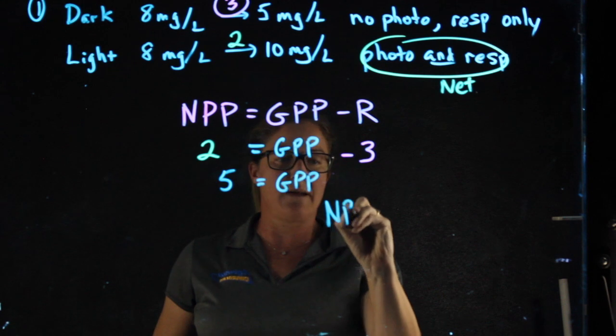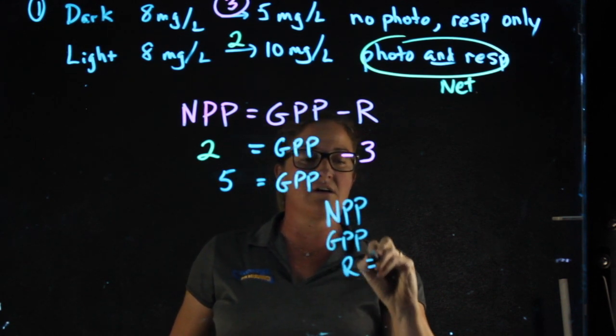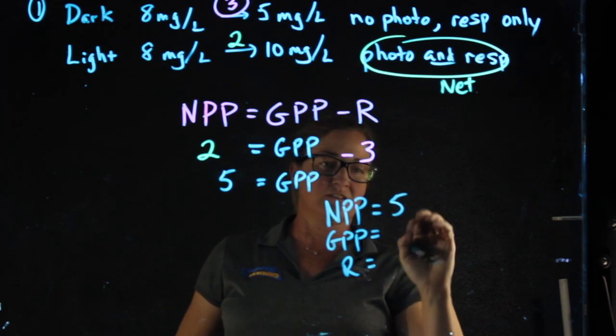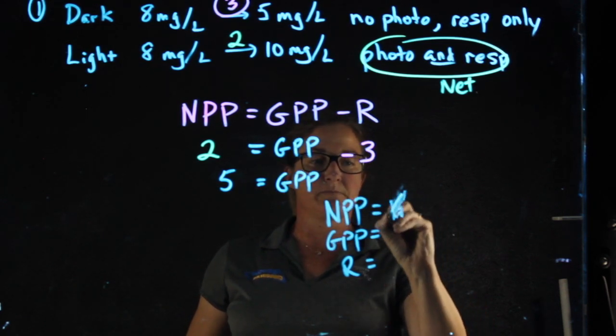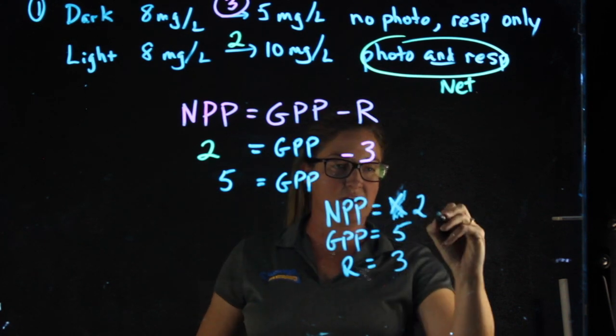Summarizing my findings: net primary productivity, gross primary productivity, and R. Net is 2, gross is 5, respiration is 3.